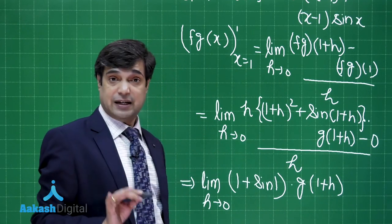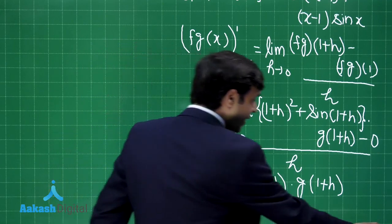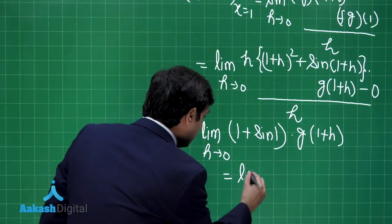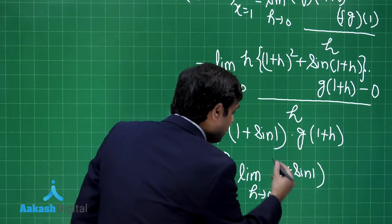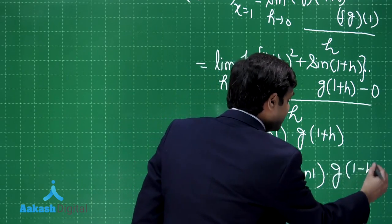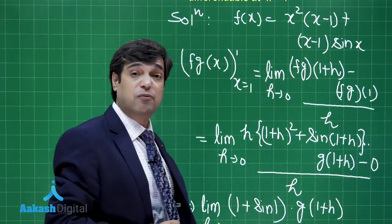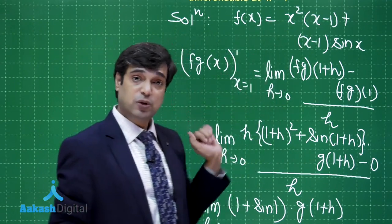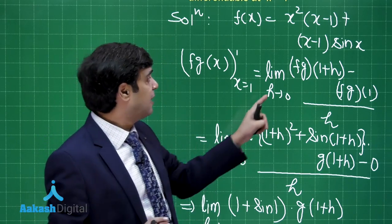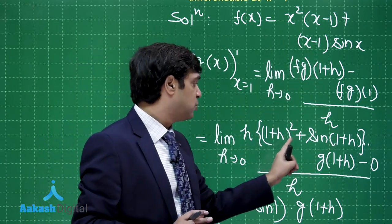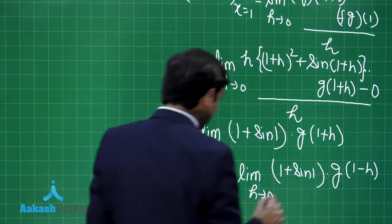Similarly, for the left-hand derivative, substituting x = 1-h gives (-h) in the numerator and (-h) in the denominator, so they cancel. On applying the limit, the remaining part gives [1 + sin(1)]·g(1-h). So the right-hand derivative equals [1+sin(1)]·lim g(1+h) and the left-hand derivative equals [1+sin(1)]·lim g(1-h).